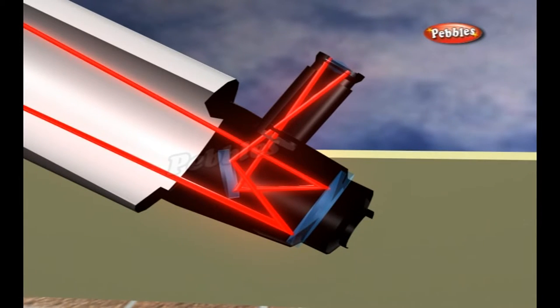Somewhere inside the tube, the light beams cross. But before they can spread out again, the eyepiece lens bends the light beams again and sends them to the eye. Because the light beams cross, the image ends up upside down.